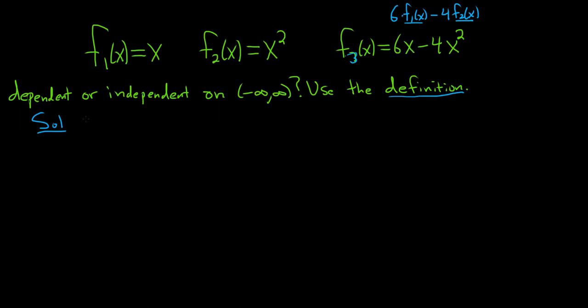You always want to start by assuming that you have a linear combination of these functions. So we'll start by saying suppose we have c1 times x plus c2 times x squared plus c3 times 6x minus 4x squared. So this is called a linear combination of our functions. And suppose it's equal to 0.